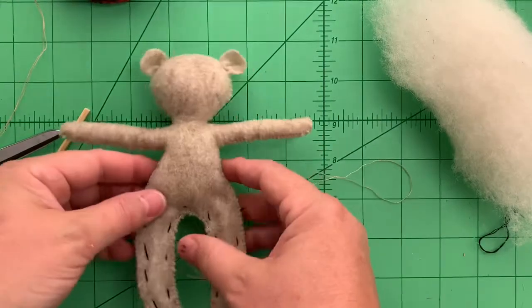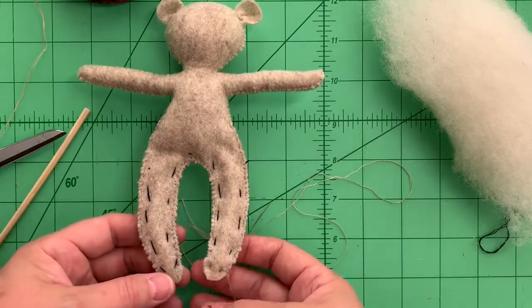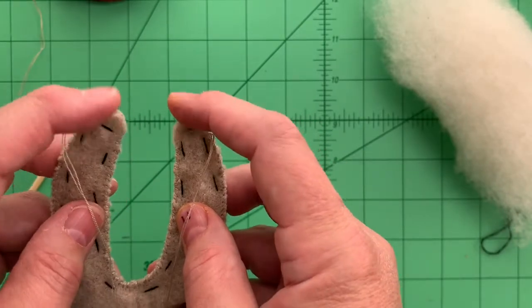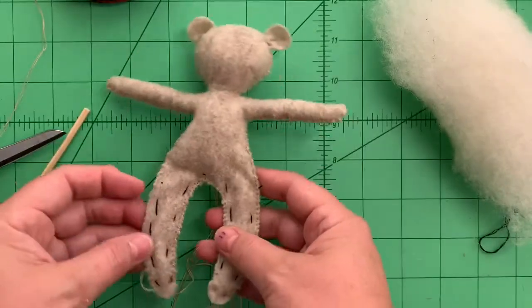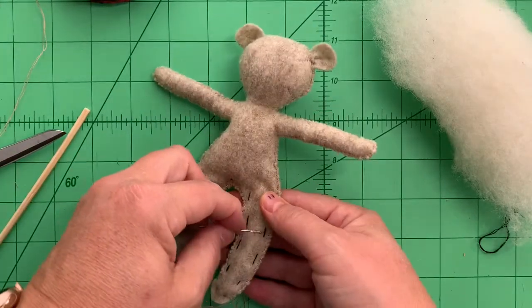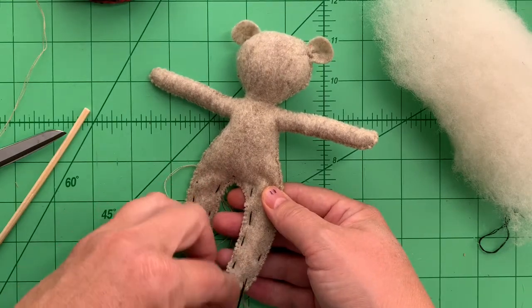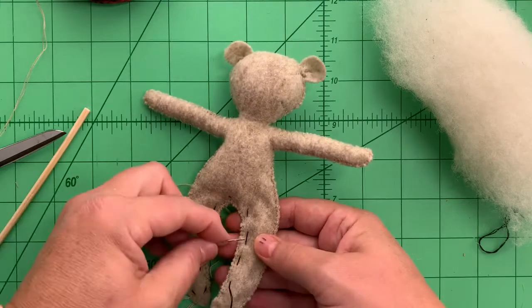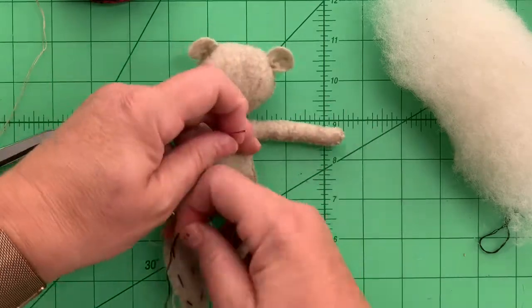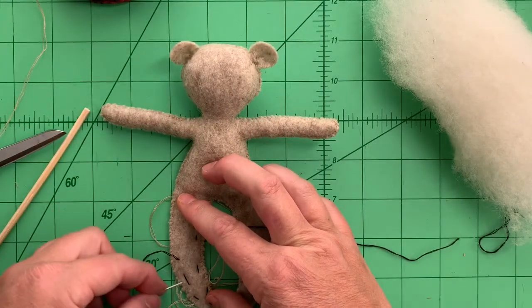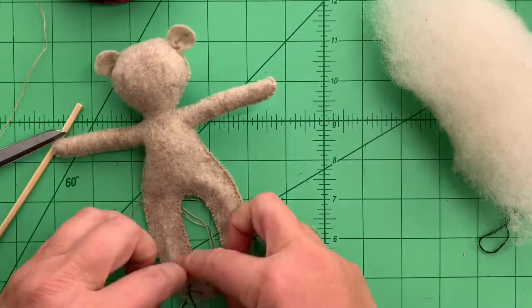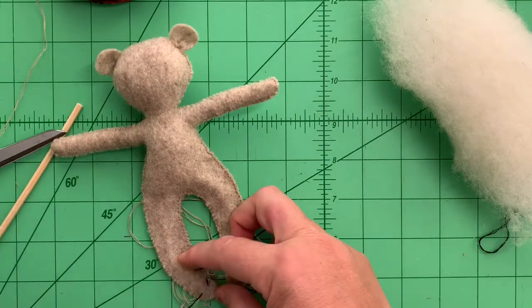Alright, my bear is almost completely stitched. All that is left are his two toes, tips of his toes. I've left them open and we're going to finish stuffing him now through those two spots. I'm going to remove the basting first, the remainder of that which hopefully shouldn't take too much. Take the basting out. There we go.